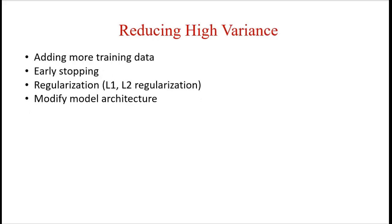Coming to high variance, we can reduce it with different methods. First and most important is to add more training data. Another way is early stopping. Early stopping means we have to identify the point after which training error grows, and stop the training there itself to reduce high variance.